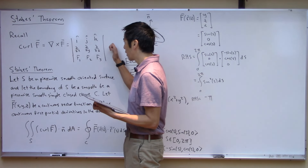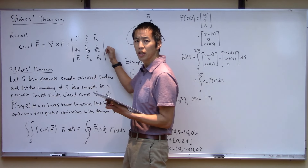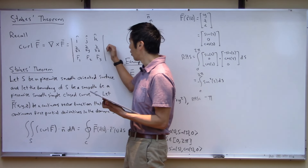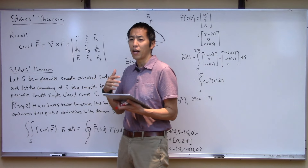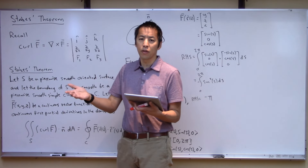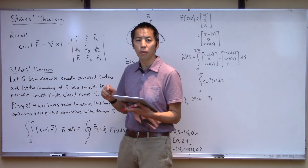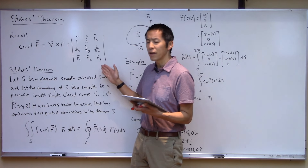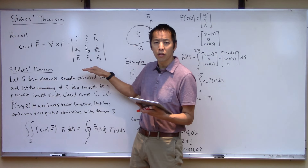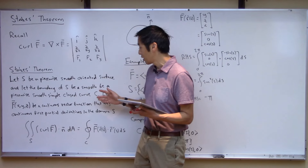Just to refresh our memory, I'm going to put this up here. Our definition of the curl of a vector field was this operation — all it did was take a vector field and allow us to compute another vector field using this sort of operation. What it then gives us is the ability to apply Stokes' theorem.